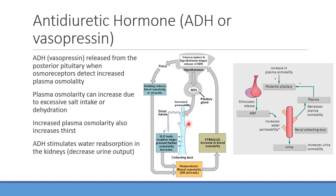Normal plasma osmolality is around 280–300 mOsm/L. ADH — also called vasopressin — is used as a drug for critically ill, severely hypotensive ICU patients. Combined with norepinephrine drips, vasopressin helps increase blood volume and vasoconstrict. A drug that increases blood pressure is called a vasopressor.